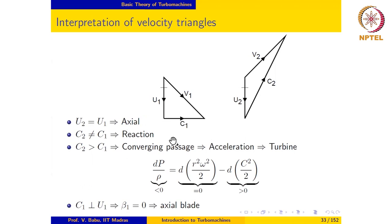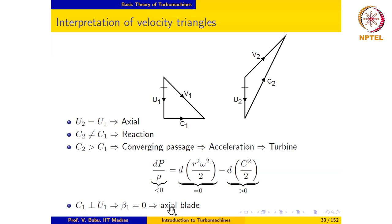Furthermore, the relative velocity at inlet is perpendicular to the blade direction, which means β1 is equal to zero. Since this is an axial machine, the blade profile at inlet is in the axial direction — it is an axial blade at entry. So this is an axial reaction machine with an axial blade profile at entry.